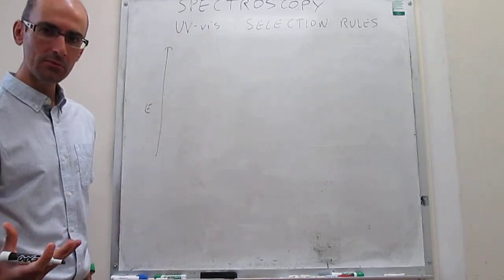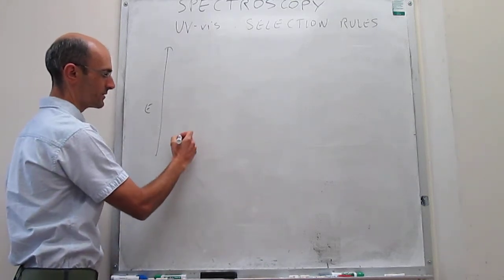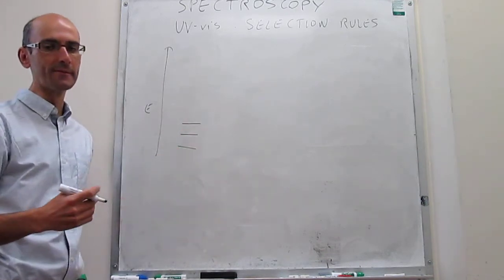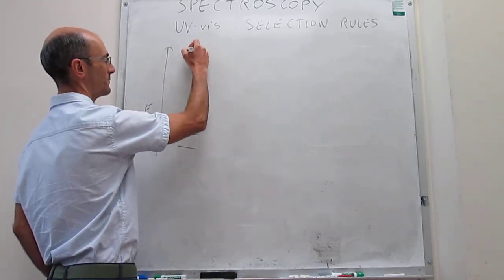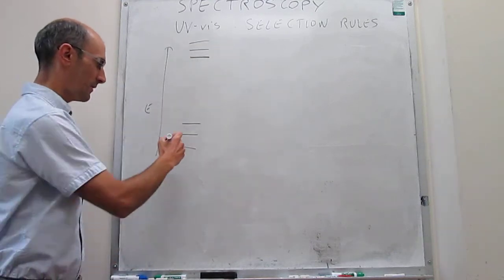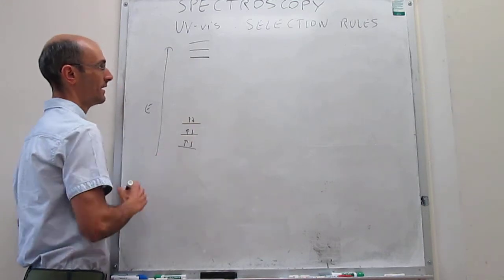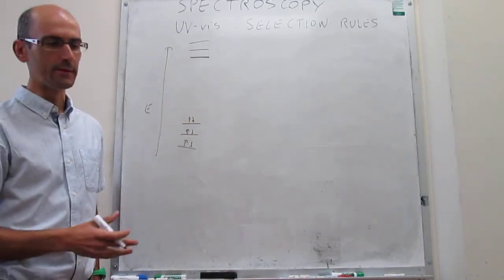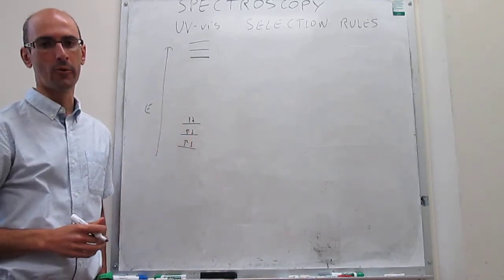If you think about a molecule in general, a generic molecule, that molecule is going to have molecular orbitals that are bonding and molecular orbitals that are anti-bonding. Usually the bonding orbitals are fully occupied and the anti-bonding orbitals are unoccupied, even though that's not always the case, but this is what represents reality more closely.